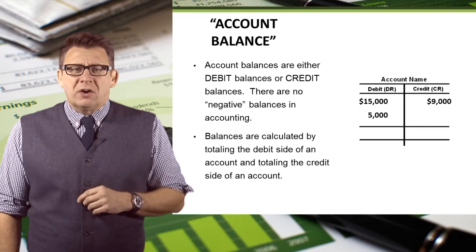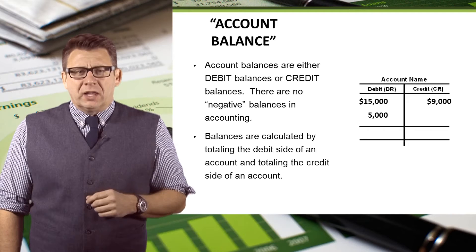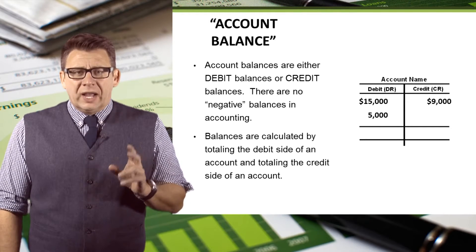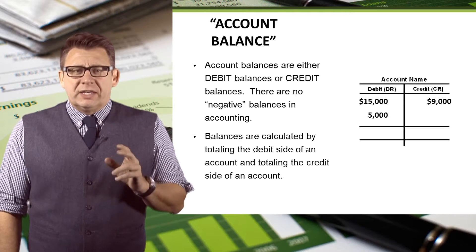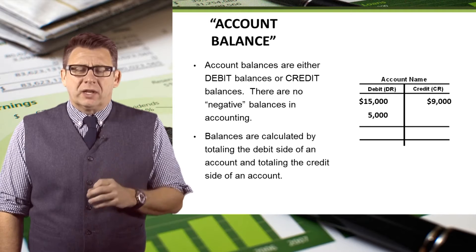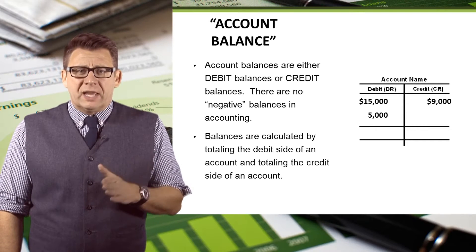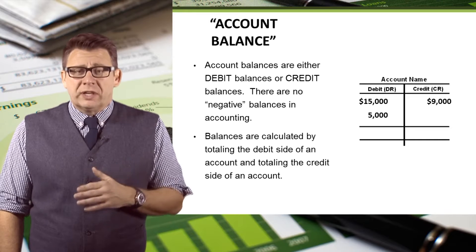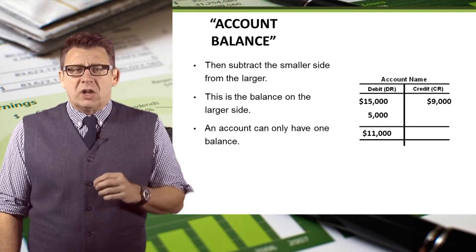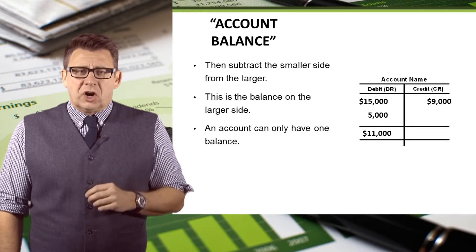Before we look at how to prepare the trial balance, let's revisit how we arrive at the ending balances in our ledger accounts. Account balances are either debit balances or credit balances — there are no negative balances in accounting. Balances are calculated by totaling the debit side of an account and totaling the credit side of an account, then subtracting the smaller side from the larger. This is the balance on the larger side.